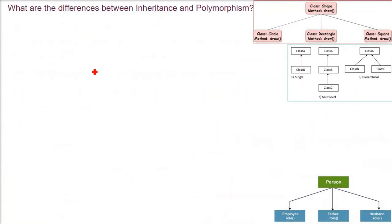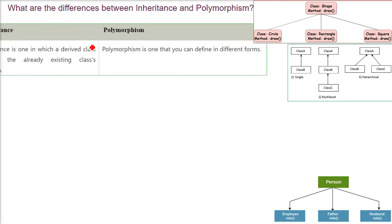What are the differences between inheritance and polymorphism? They both are the basic building blocks of the object-oriented paradigm. These are concepts in object-oriented programming languages implemented using different constructs. Let us take one by one example of the differences.